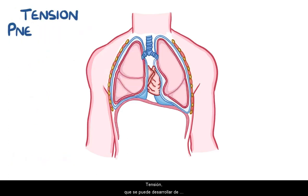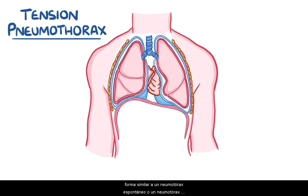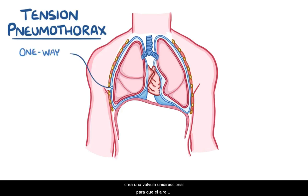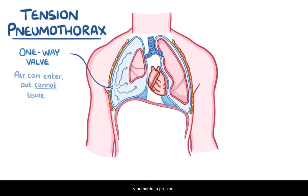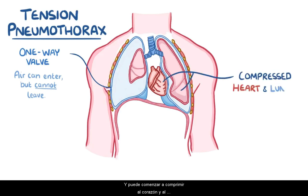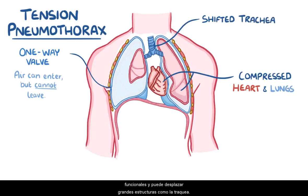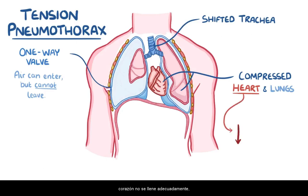Finally, there's tension pneumothorax, which can develop similarly to a spontaneous or traumatic pneumothorax, with the one difference being that it creates a one-way valve for air to flow into the pleural space. Air can enter but cannot leave because there's a flap of tissue that doesn't allow air to go the other way. Over time, air builds up, increasing the pressure, and it can start compressing the heart and lung, making them less functional, and can shift large structures like the trachea. A tension pneumothorax pressing on the heart is particularly dangerous because it can prevent the heart from filling up properly, reducing cardiac output.